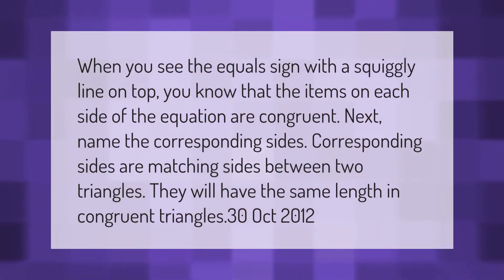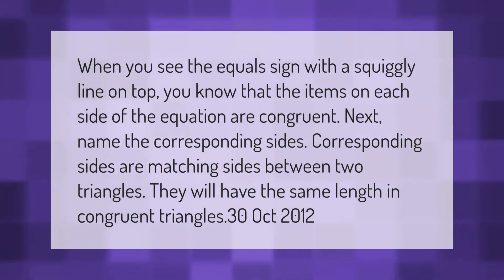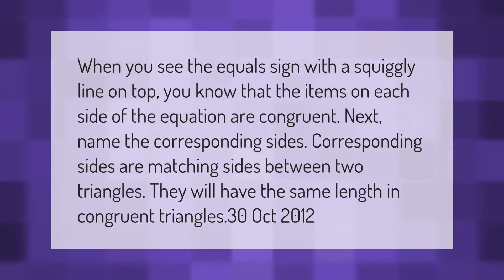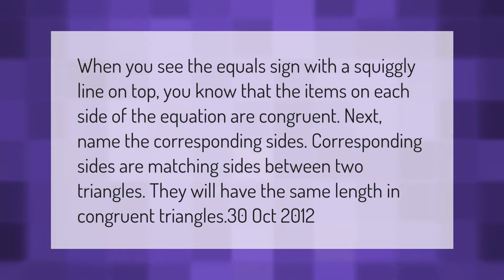When you see the equal sign with a squiggly line on top, you know that the items on each side of the equation are congruent. Next, name the corresponding sides. Corresponding sides are matching sides between two triangles — they will have the same length in congruent triangles.